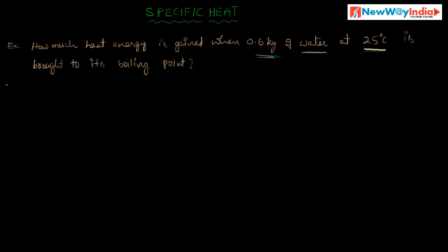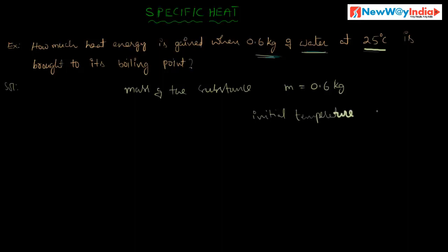Now for the solution, the given data is: mass of the substance M is equal to 0.6 kg. The initial temperature is 25 degree centigrade. The final temperature means boiling point, so the final temperature is 100 degree centigrade.